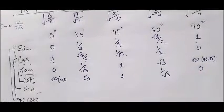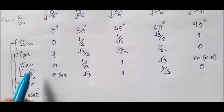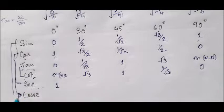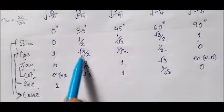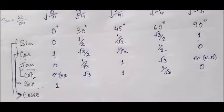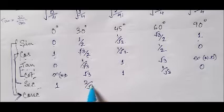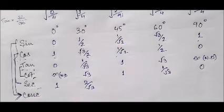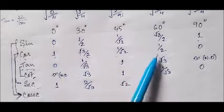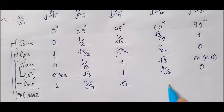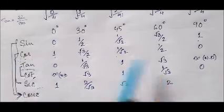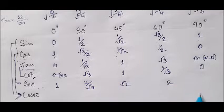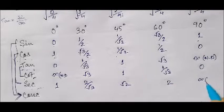For sec: cos 0 is 1, so sec 0 is 1. Cos 30 is root 3 by 2, so sec 30 is 2 by root 3. Cos 45 is 1 by root 2, so sec 45 is root 2. Cos 60 is 1 by 2, so sec 60 is 2. Cos 90 is 0, so sec 90 is infinity — that is, not defined.